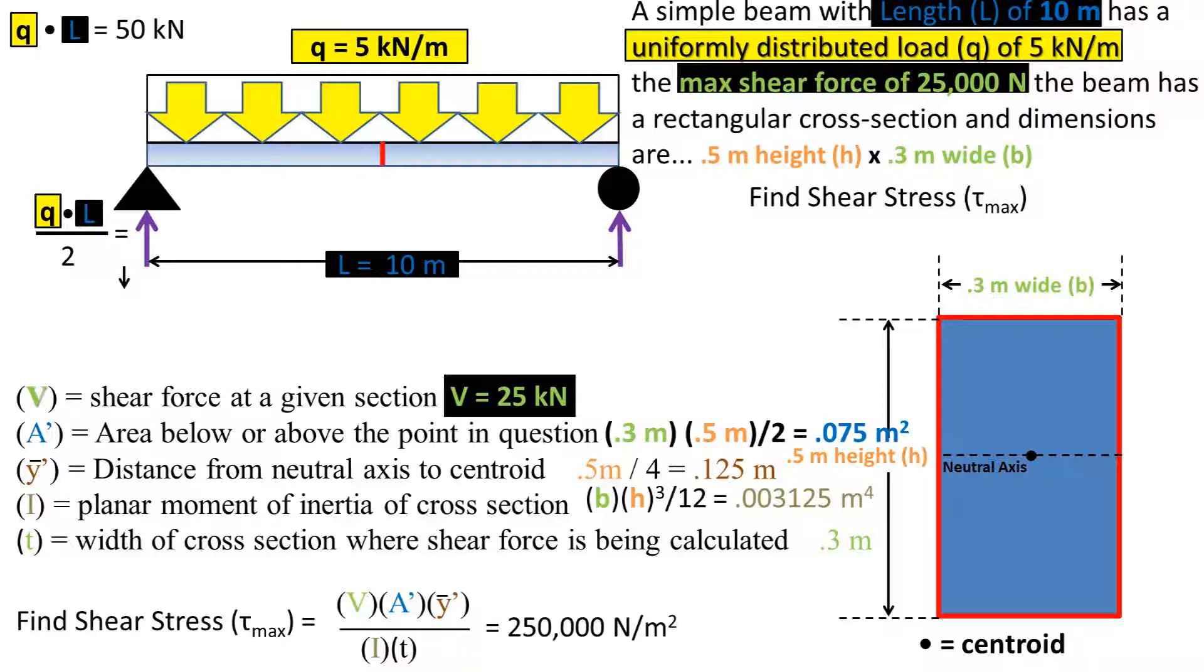Now that we have all of our variables, we can plug them into the equation at the bottom. We get a shear stress max of 250,000 newtons per meter squared, or pascals.